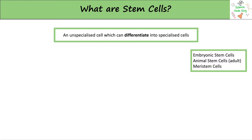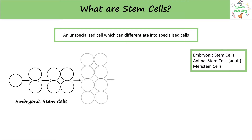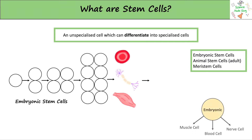Let's first look at embryonic stem cells. These are the cells which can form any type of cell and are found in the early embryo. It's really important for these cells to be able to turn into any cell, as these are the original cells we start with. They continue to divide like any normal cell; however, at the eight-cell stage, these embryonic stem cells can begin to differentiate into specialised cells.